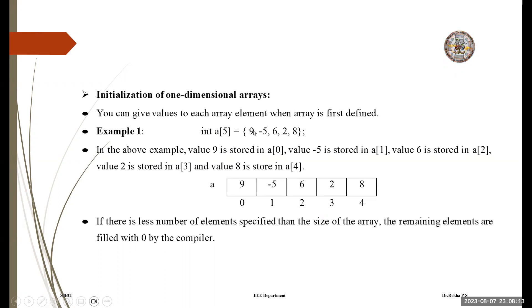When you initialize like this, how does it look? In this example, value 9 is stored in A[0], value minus 5 is stored in A[1], value 6 is stored in A[2], 2 is stored in A[3], and value 8 is stored in A[4]. In memory, it looks like this — A is the array name.